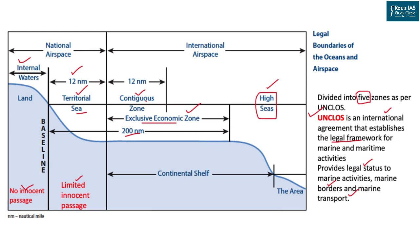The contiguous zone is 12 nautical miles next to the territorial sea. In this zone, the seabed right and ocean water right are available to a particular nation, but the airspace above it is not under the jurisdiction of the coastal state — that is where international airspace begins. So a flight from Pakistan can easily pass through the contiguous zone of India.